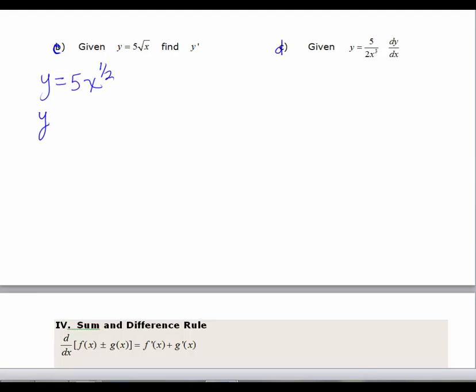Now I can take the derivative. y prime is equal to 1/2 times 5 times x to the 1/2 minus 1, which is minus 2/2. That gives us 5/2 times x to the negative 1/2. Again, this is an acceptable answer.